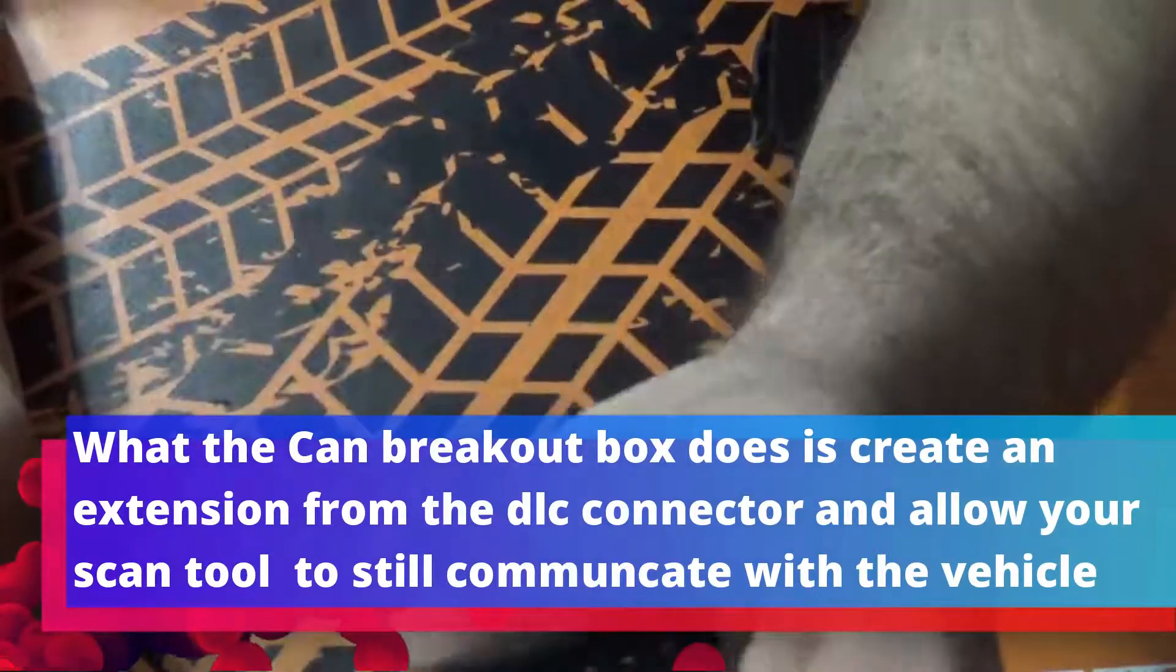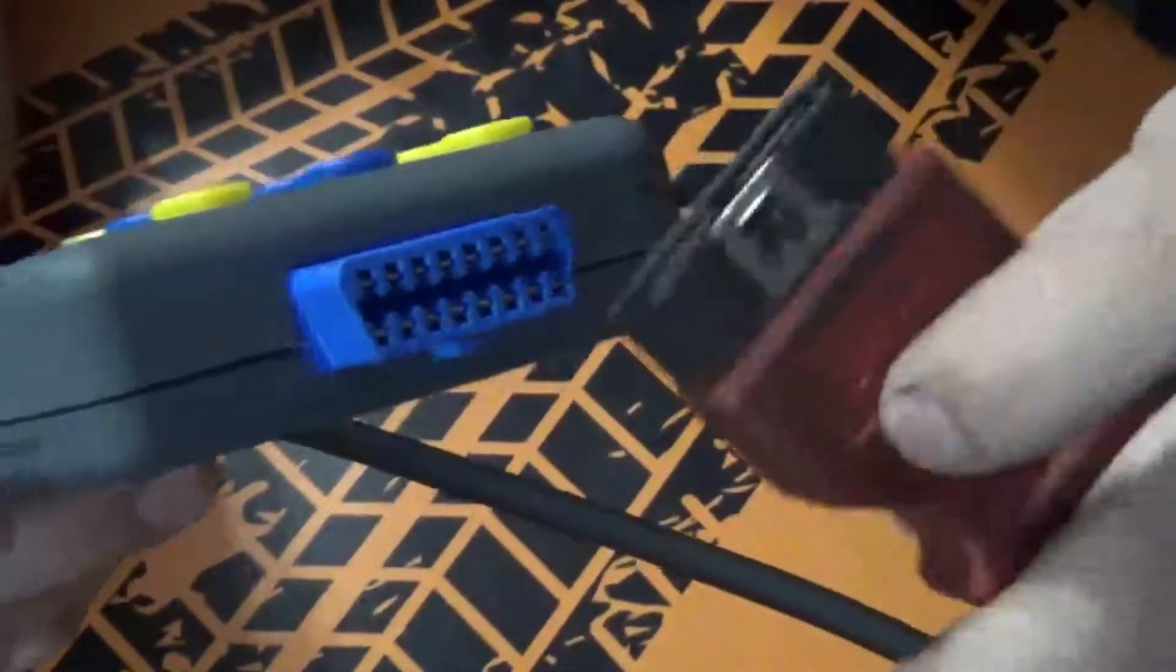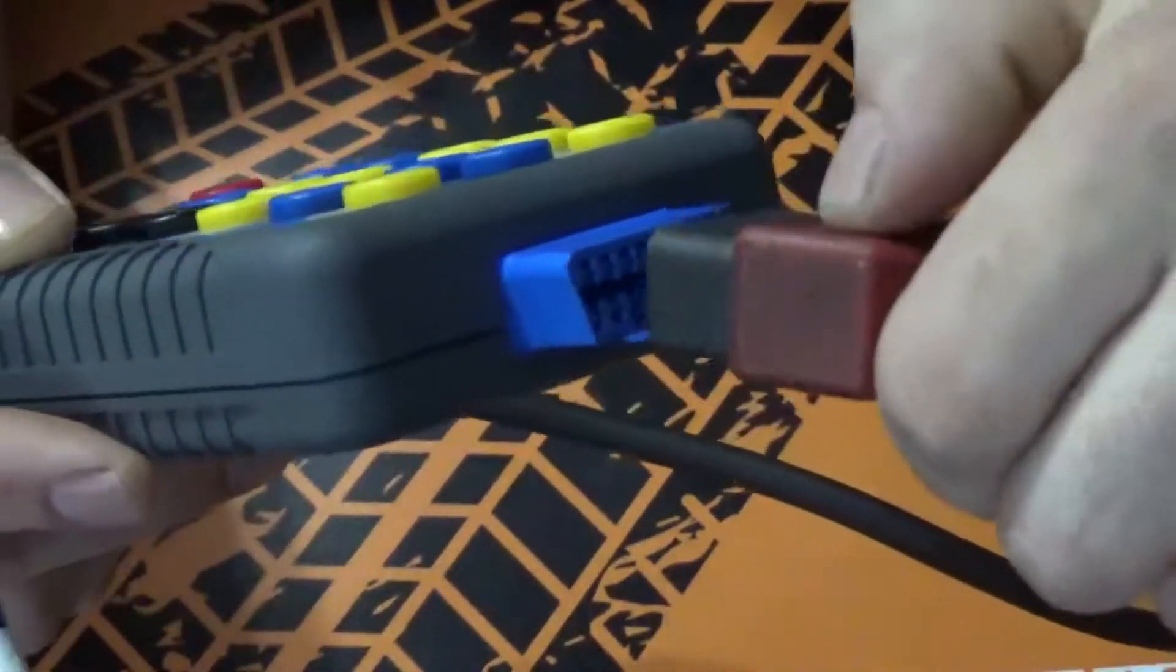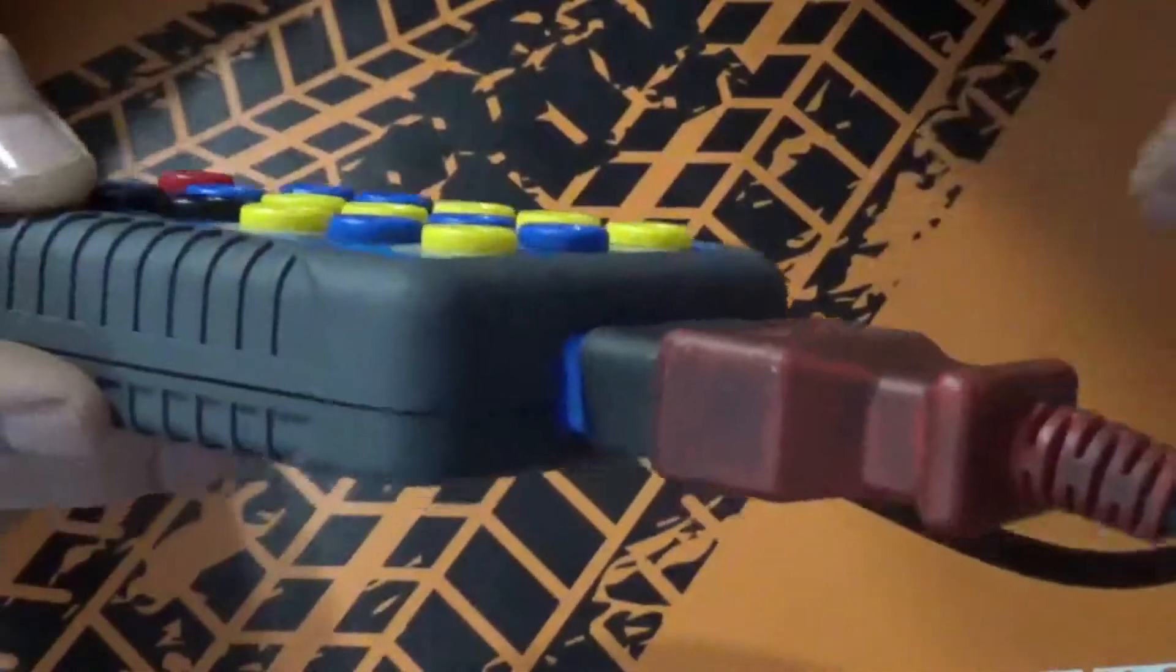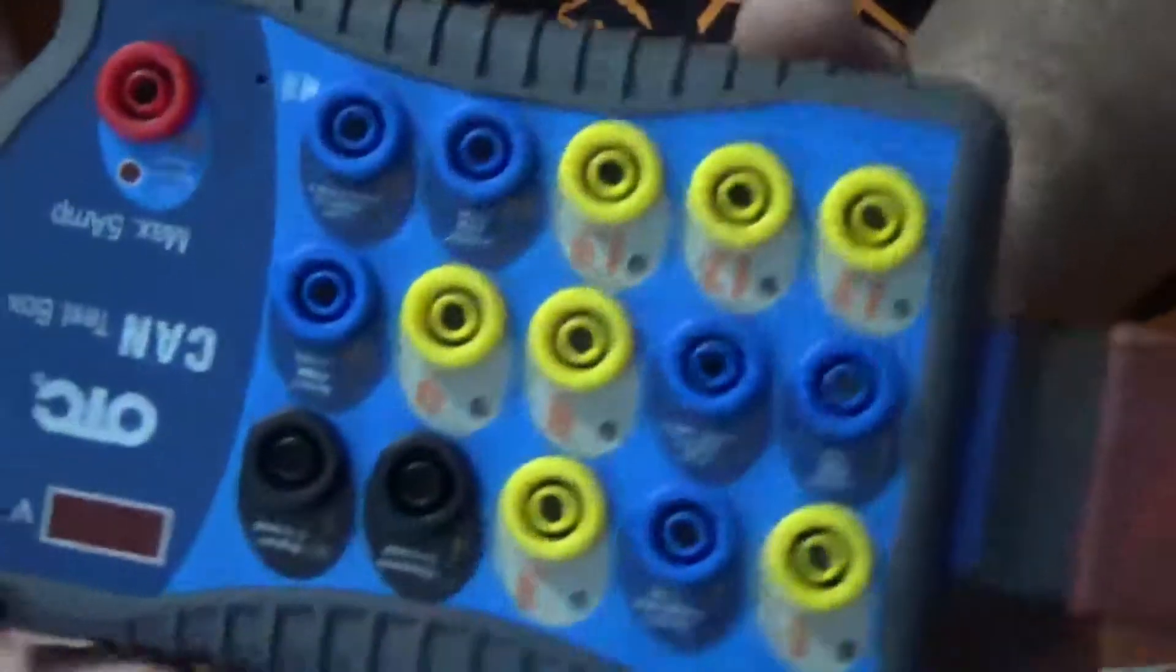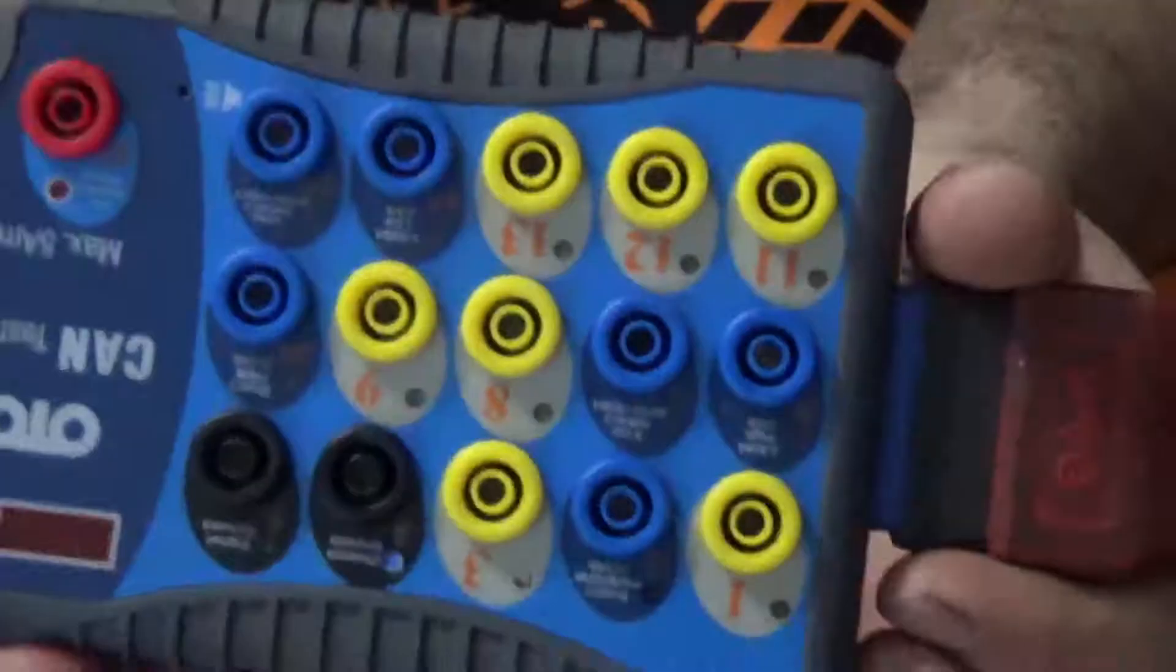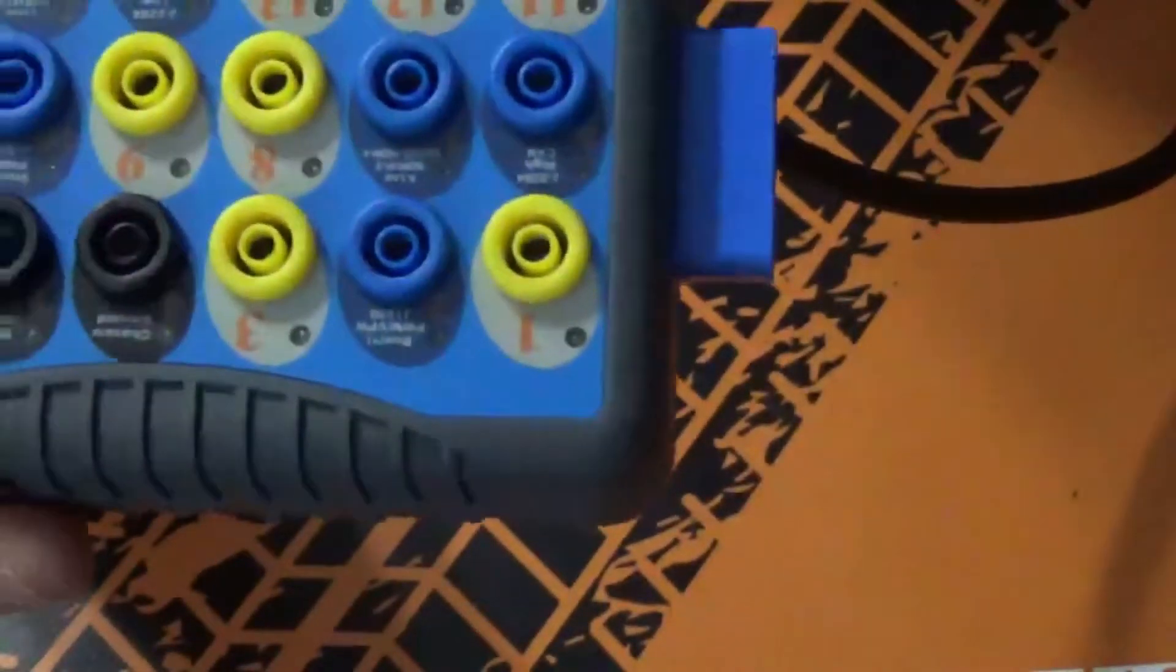So this is for a scan tool. So this guy would come and it would plug on here like this. And now this would allow communication between the scan tool and the vehicle and also give you a breakout box in order to perform test and diagnosis of the suspected CAN system.